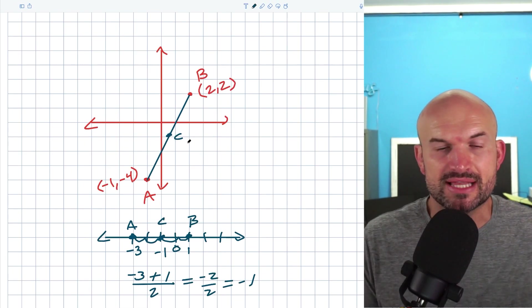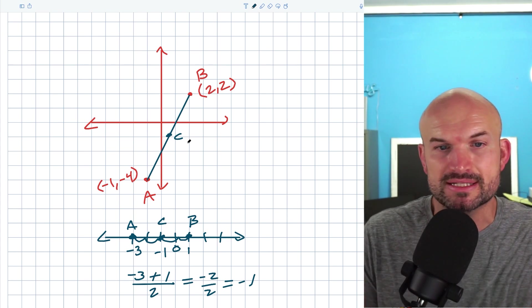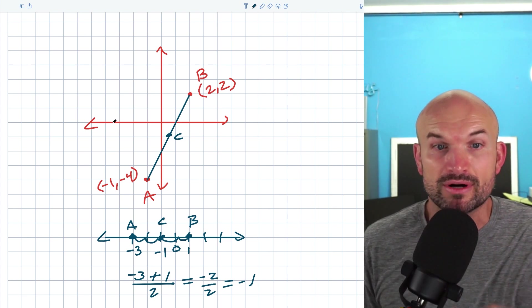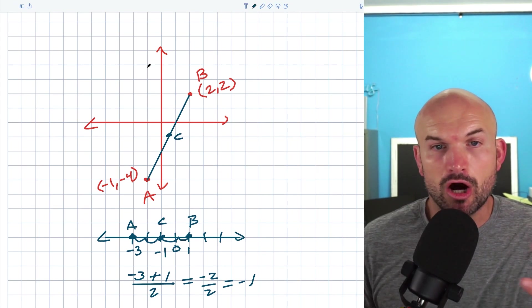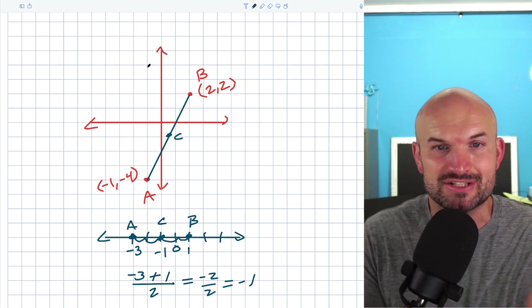So how does that compare or how do we use that when we're looking at coordinate points? Well, the main thing I want you to understand with the coordinate plane here is we have a horizontal number line and we have a vertical number line. All the coordinate plane is, is horizontal and vertical lines, which create this horizontal grid.